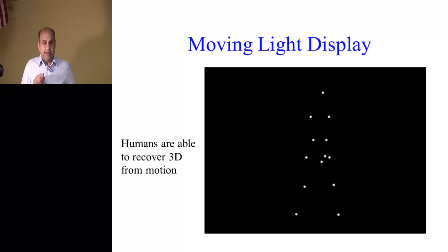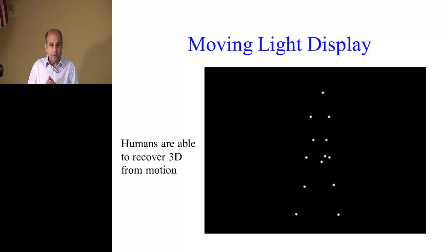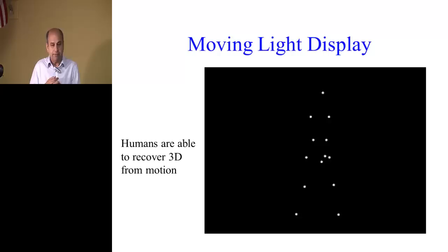Humans have different cues to recover 3D — stereo is one, motion is another, shading is a third, and many more. What we perceive is an integration of all those cues. If we mask out all other cues, just motion alone is still a pretty powerful cue to recover 3D.